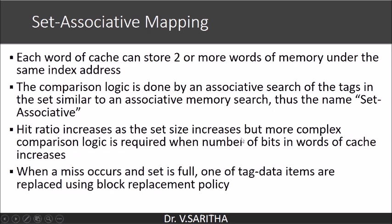The hit ratio increases as the set size increases, but more complex comparison logic is required as the number of words in the cache grows. Increasing the set size makes it approach fully associative mapping, which may yield a slightly higher hit ratio, but the comparison logic becomes complex. That is why we use set associative mapping. When a miss occurs and the set is full, one of the tag/data items is replaced using a block replacement policy.